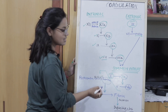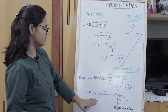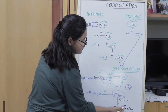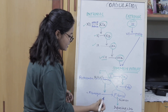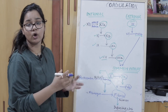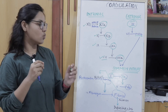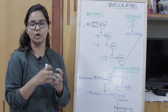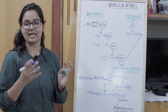Thrombin then converts fibrinogen to fibrin — this is a very important step. Fibrin is then stabilized by factor 13, the fibrin stabilizing factor, to form the definitive clot. Factor 13 stabilizes the fibrin molecules and makes the clot stronger. Thus the definitive clot that is formed is actually very strong.